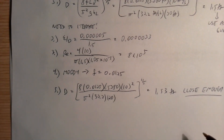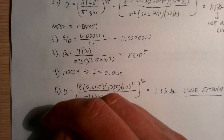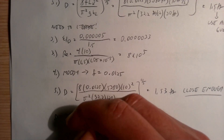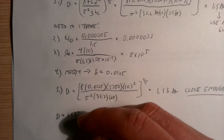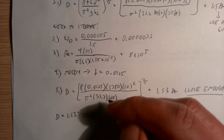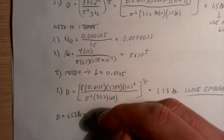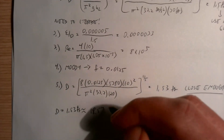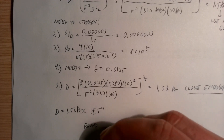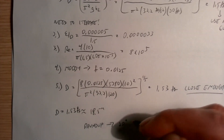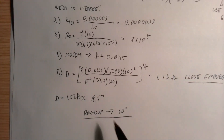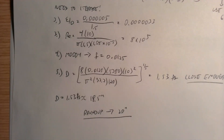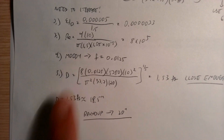The required diameter is D ≈ 1.53 feet, which is about 18.5 inches. Since you can't purchase a pipe of exactly that size, we round up to the nearest available standard size — likely a 20-inch pipe — to ensure a factor of safety. That final rounding step completes the iterative procedure.